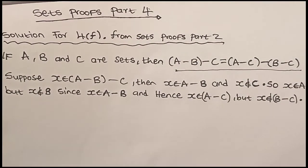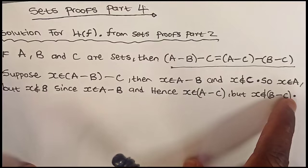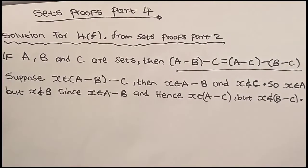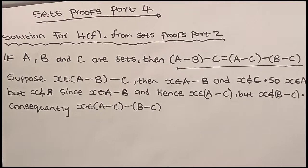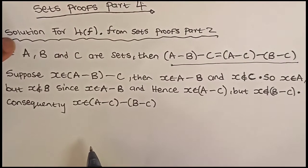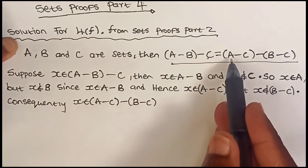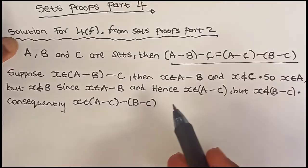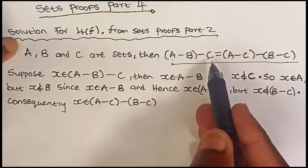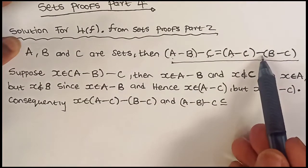Since x is in A-C but not in B-C, consequently x will be an element of (A-C)-(B-C). And for that reason we have shown that if x is an element of A-(B-C), it will be an element of (A-C)-(B-C). So A-(B-C) is a subset of (A-C)-(B-C).